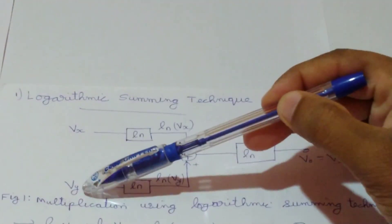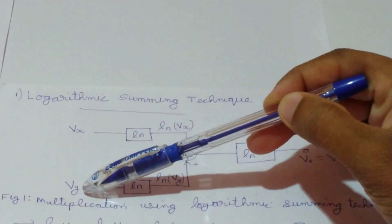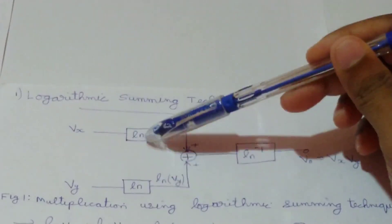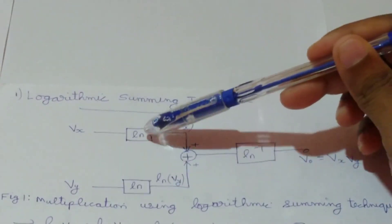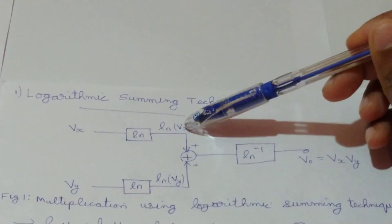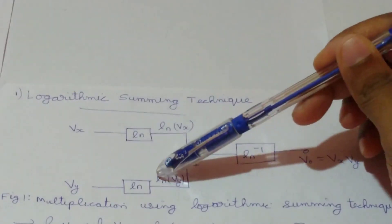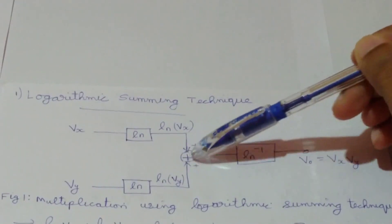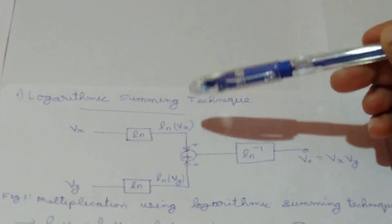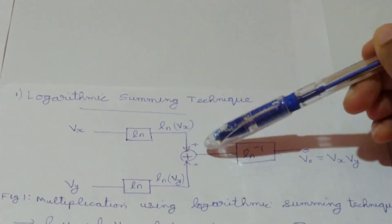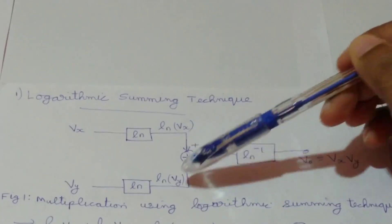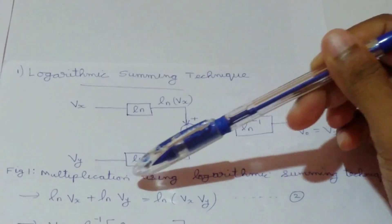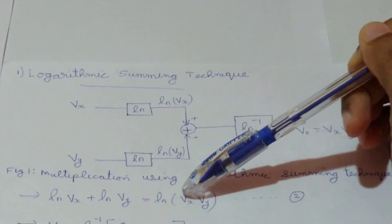Here Vx and Vy are the inputs and they are converted to their logarithmic equivalents by using log converters. So here we will get the natural log of Vx and the natural log of Vy. Then those two values are added together by using this summing junction, giving us ln(Vx) plus ln(Vy), and we know that ln(Vx) + ln(Vy) = ln(Vx·Vy).